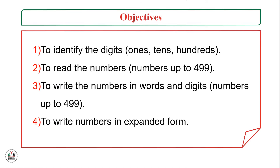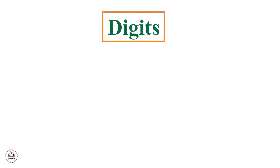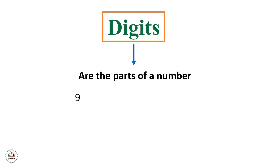Let's start. In the engage and explore for this lesson, we talked about the numbers from 1 to 99. And now we will learn what we mean by digits. Digits are the parts of a number. For example, here we have 9. 9 is ones. So here we have only one digit.